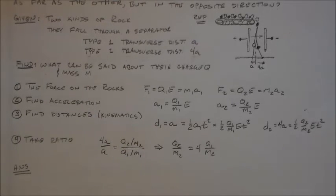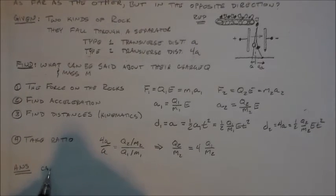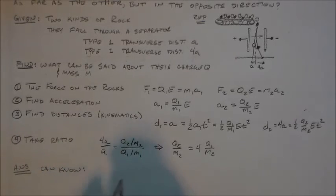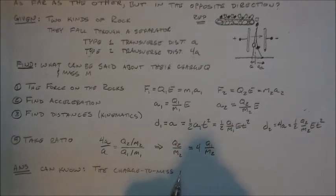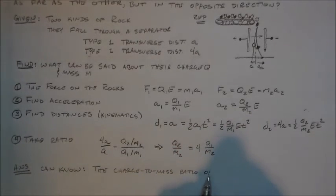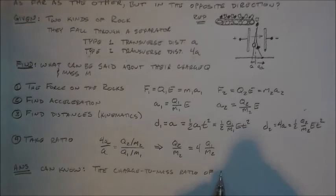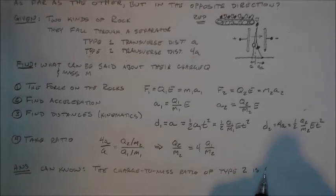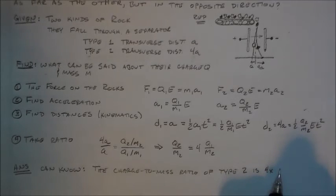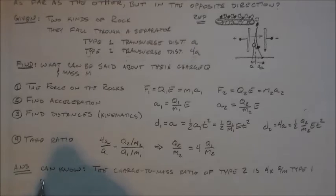So that's all the work there, and then I have to answer my problem. So I've done my work, now I have to actually answer that problem. And so what is the answer? The answer is, I can know the charge to mass ratio of type 2 rocks is 4 times that of the charge to mass ratio of type 1 of the rocks. That's what I can know.